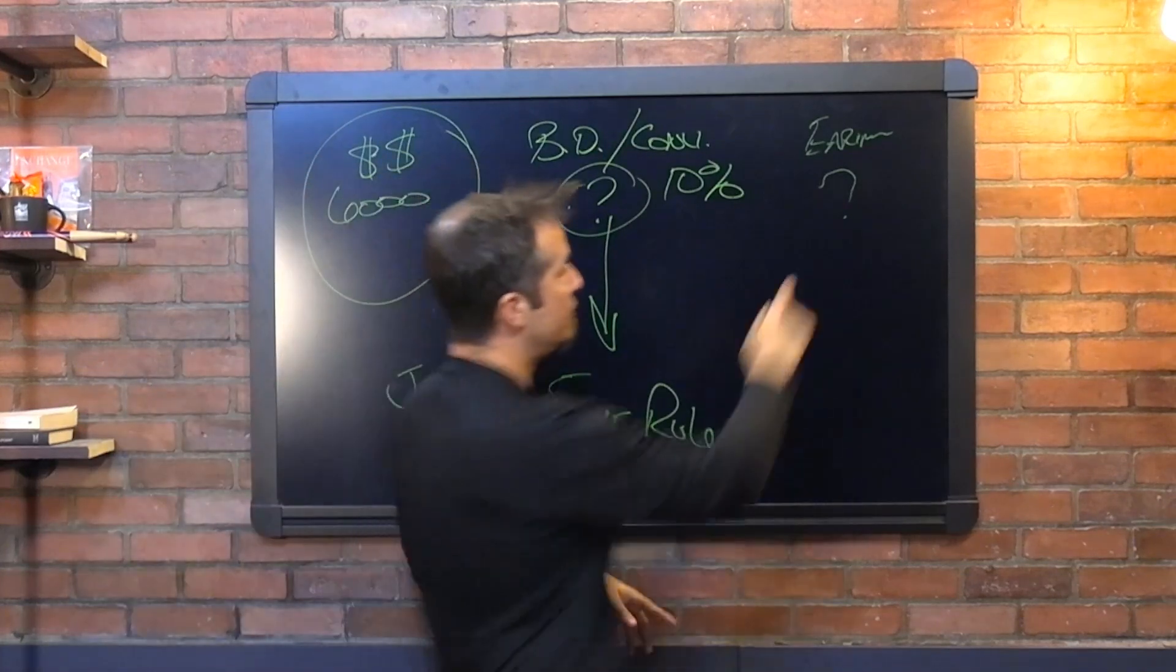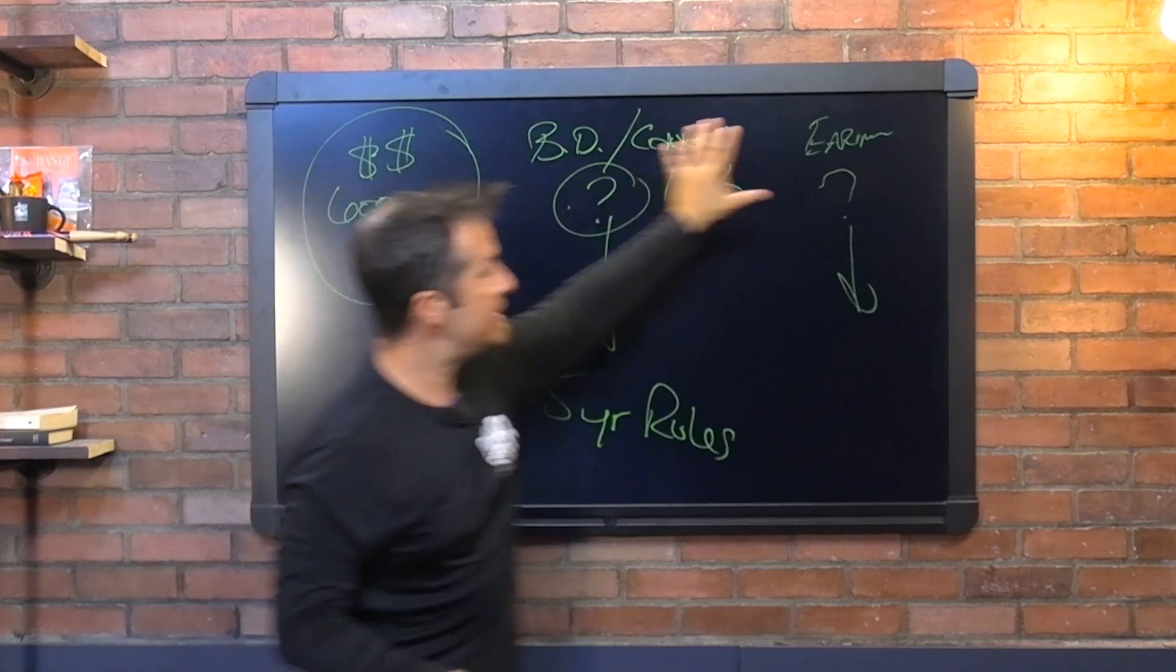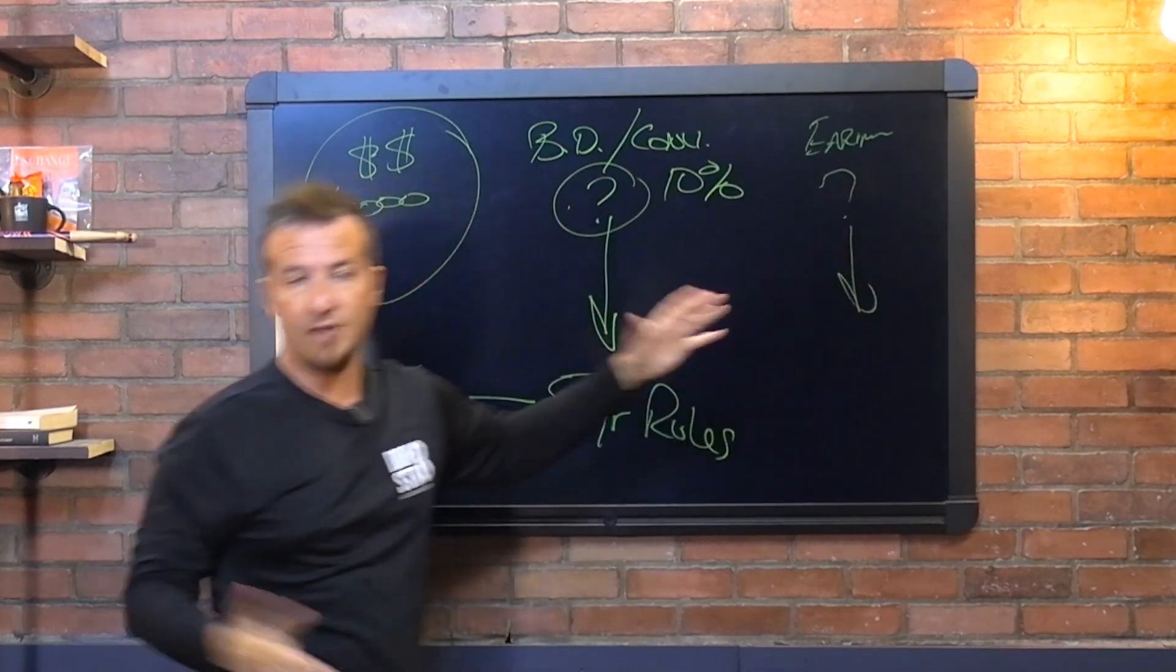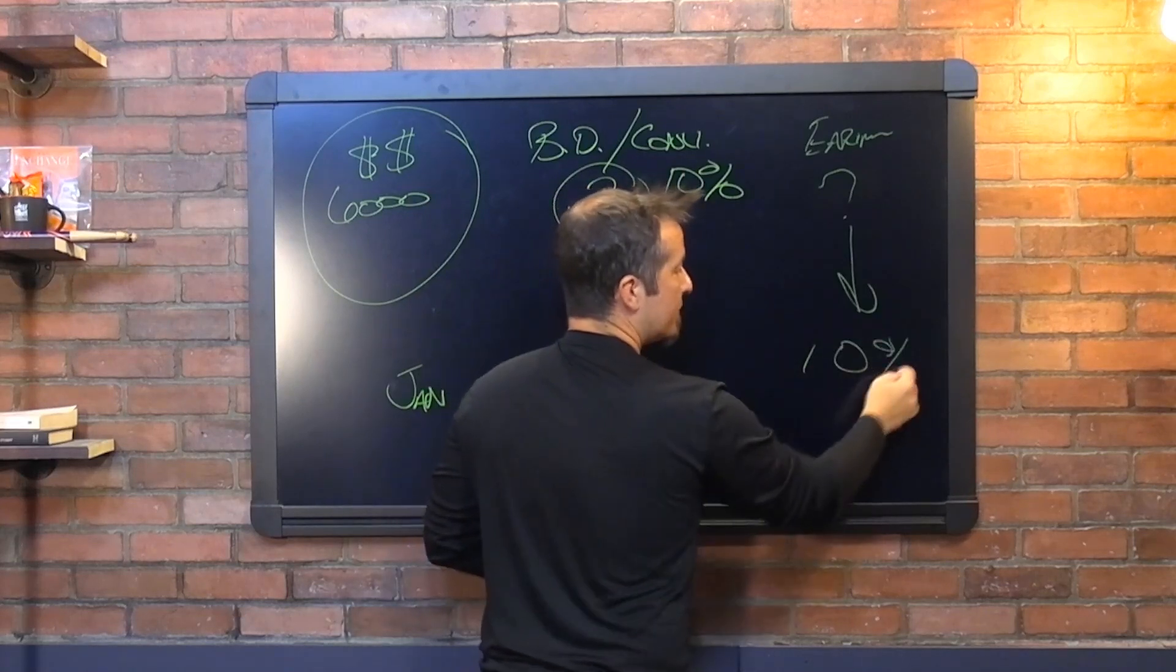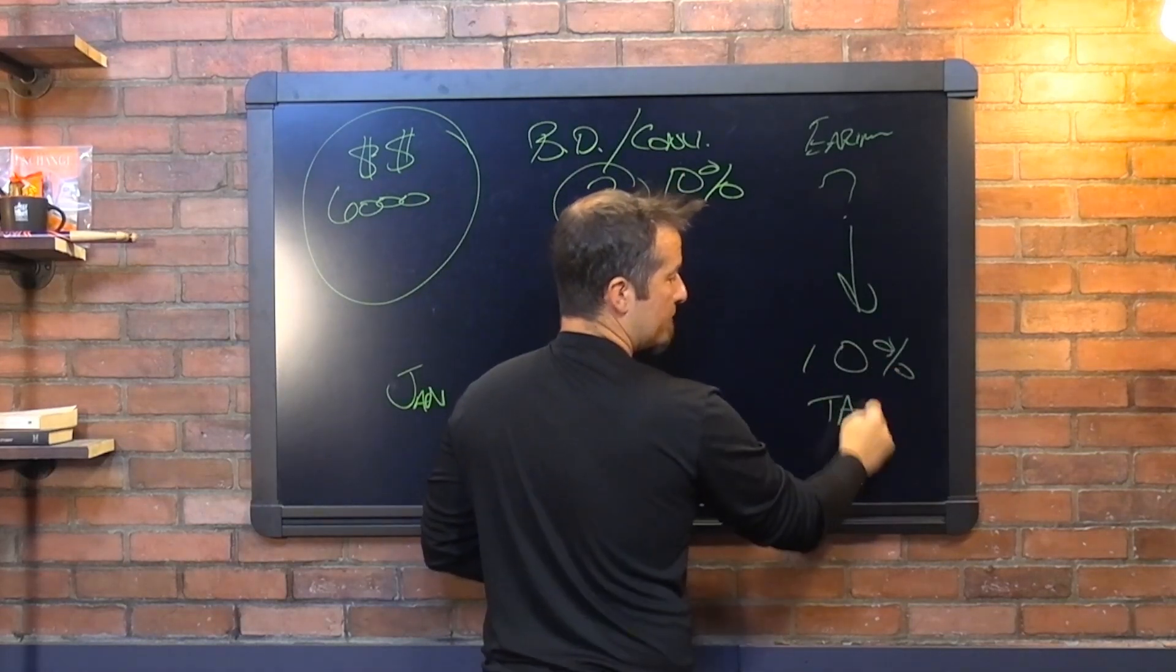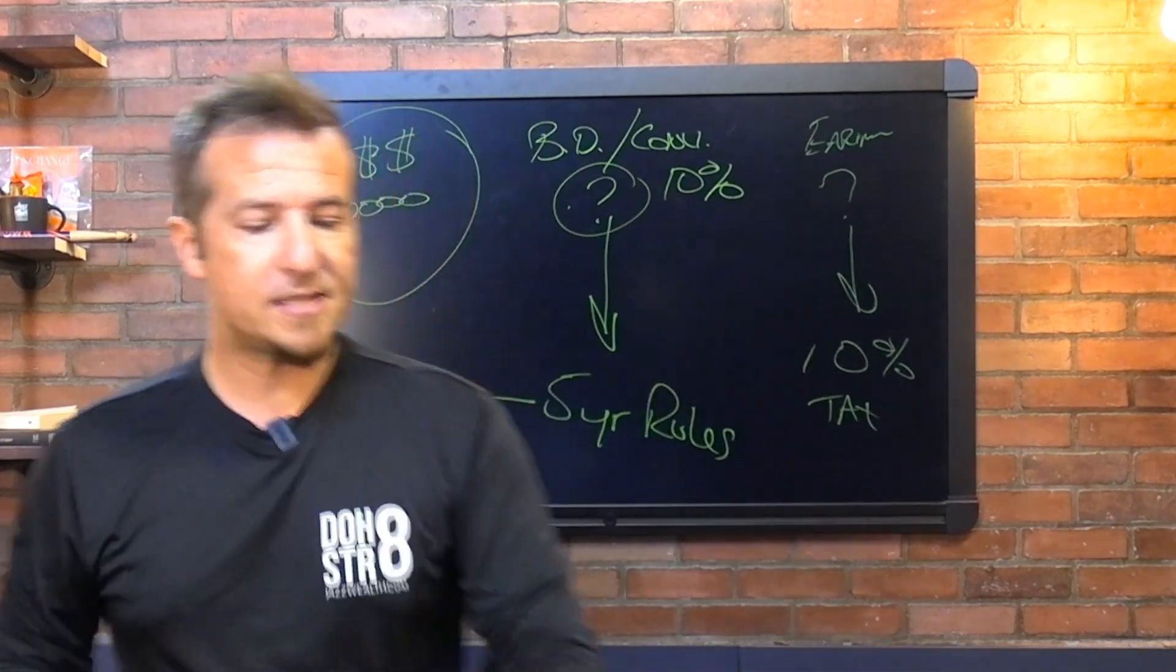From here you go on to earnings. So let's say we depleted all this, we depleted all this, now we're on to the earnings. If that happens to be the case, there's no way around it. Now you have the penalty and the income tax on the growth there.